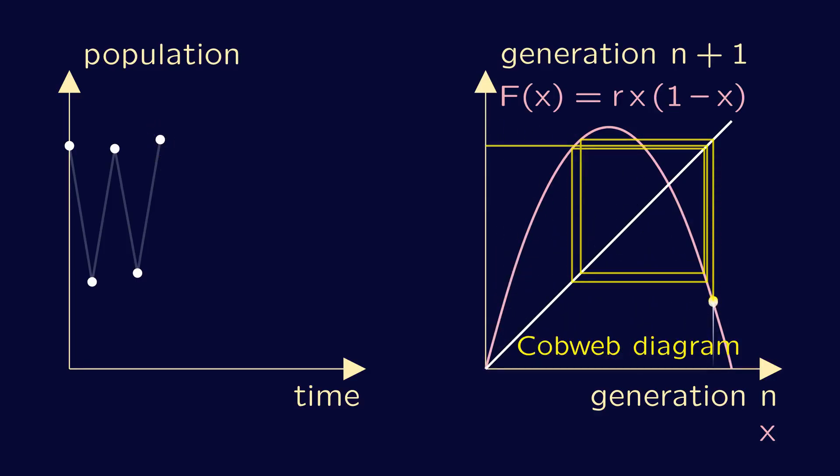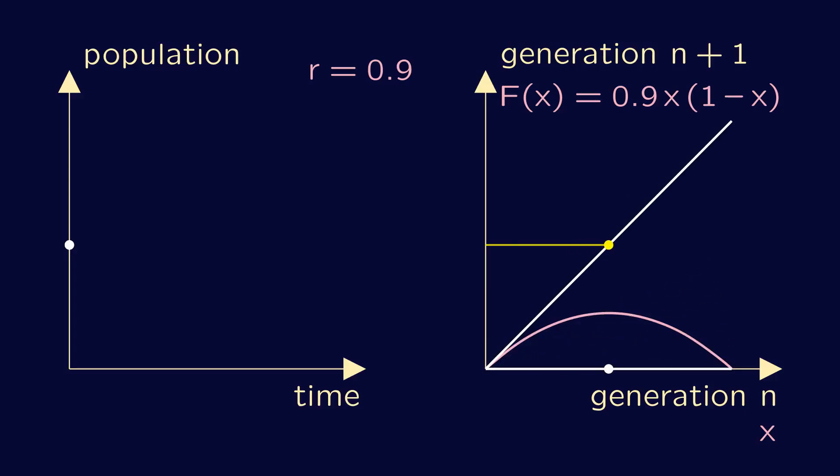The shape of the cobweb diagram, and the ultimate fate of our butterflies, depends on the value of the constant r in the logistic map. If r is one or less, then the population size decreases in every step, and eventually converges to zero, meaning that the butterflies will die out, unfortunately. The cobweb diagram here is a staircase with smaller and smaller steps, slowly descending to the origin.